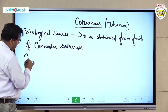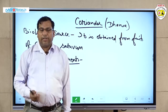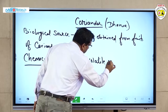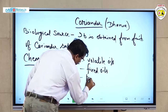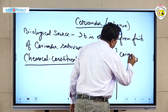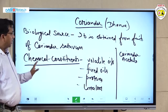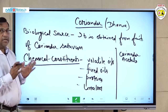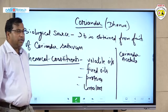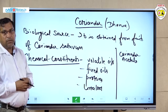We will now discuss about the chemical constituents of coriander. Coriander contains volatile oils, fixed oils, proteins, linalool, and coriander acetate. These are the chemical constituents of coriander (dhaniya). These constituents play an important role to maintain GIT functions. Volatile oils like linalool and coriander acetate play an important role to reduce or expel the gases from the GIT.